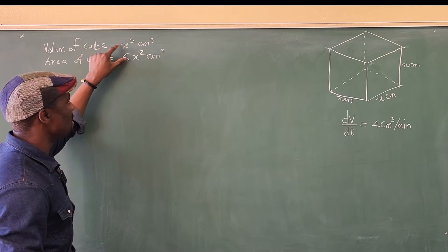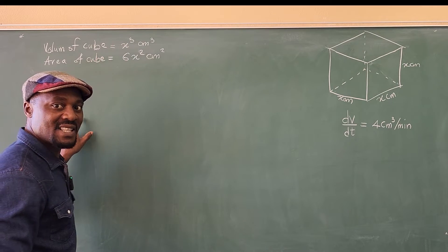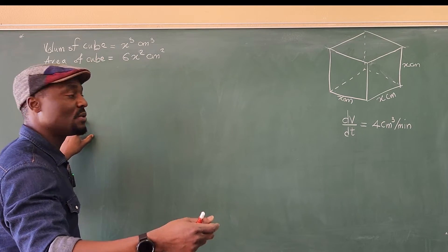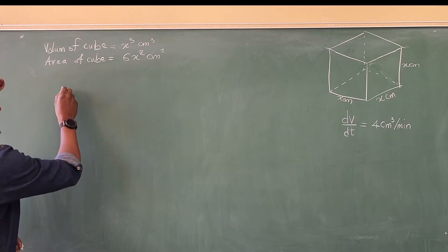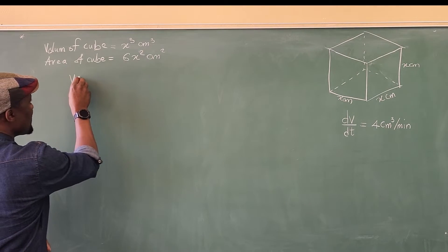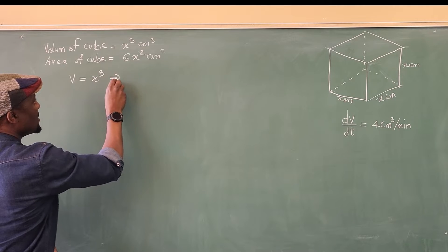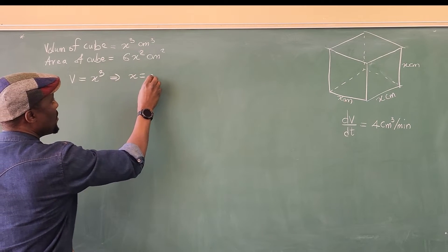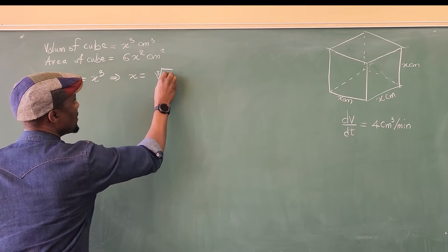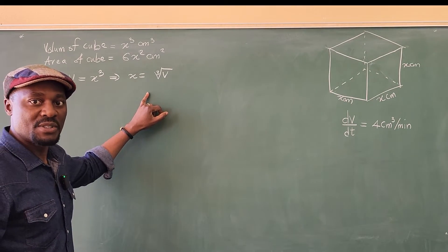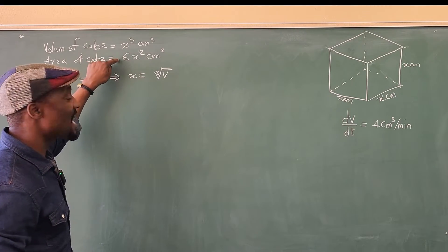So see what I'm going to do. I'm going to say V is equal to x cubed. That means that x is equal to the cube root of V. I have found a representation for x. You do the same thing for area.